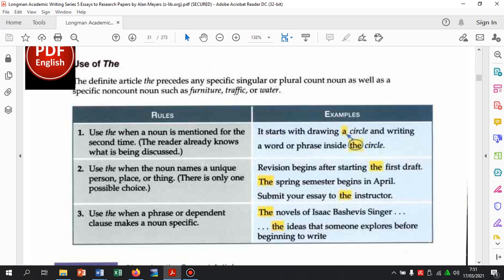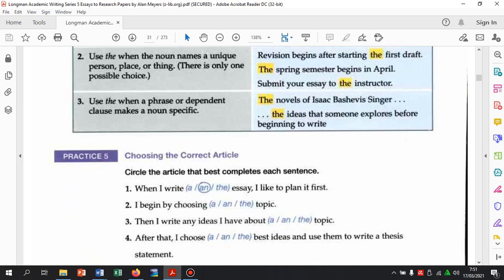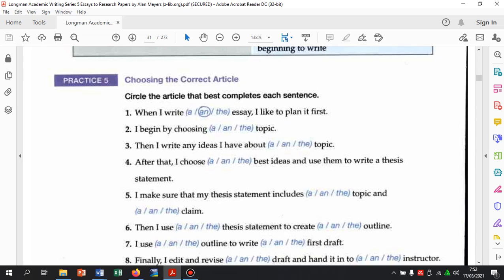Use the when the phrase or dependent clause makes a noun specific. Ketika kalian membuat phrase itu atau mungkin kalimat dependent clause-nya, itu membuat kata benda itu menjadi specific. Contoh. The novel of Isaacs. Ini dia spesifik di sini. Karena hanya membahas novel dari si Isaac. Lihat novelnya juga plural di sini. Jadi boleh di plural. The ideas that someone explores more before beginning to write. Kalau ideas saja kita bahas mungkin umum. Tapi di sini ada kata-kata that. Adjective clause.